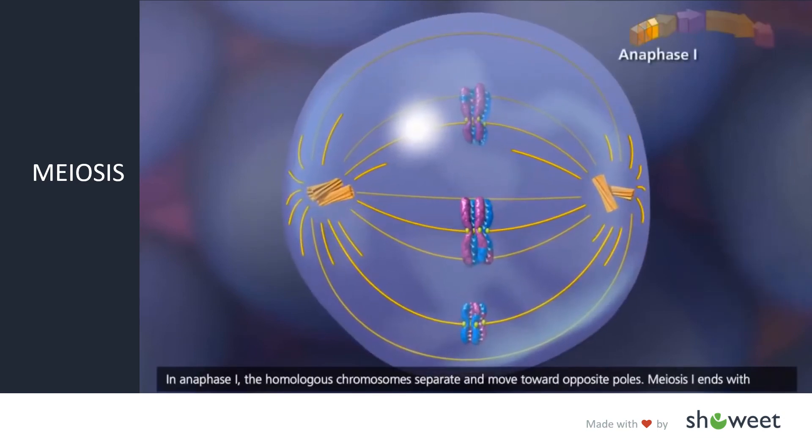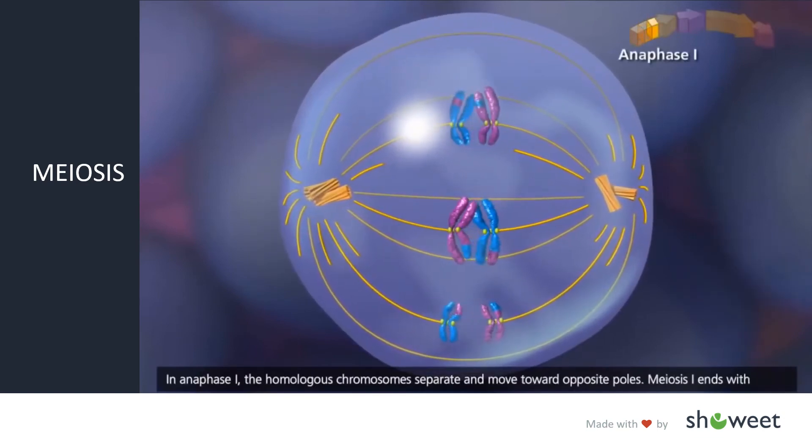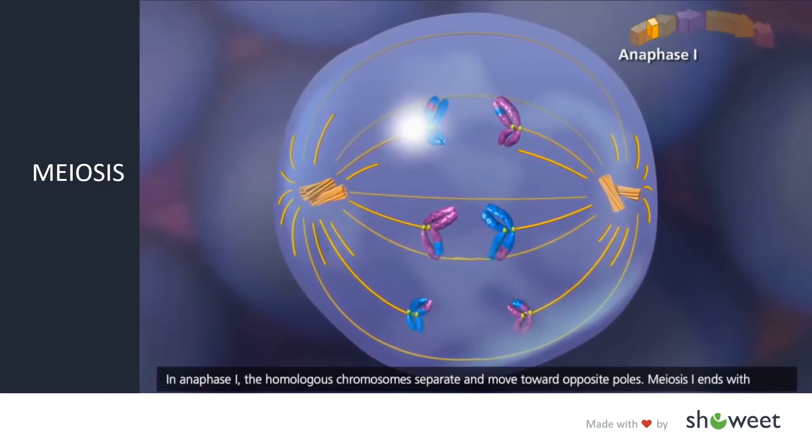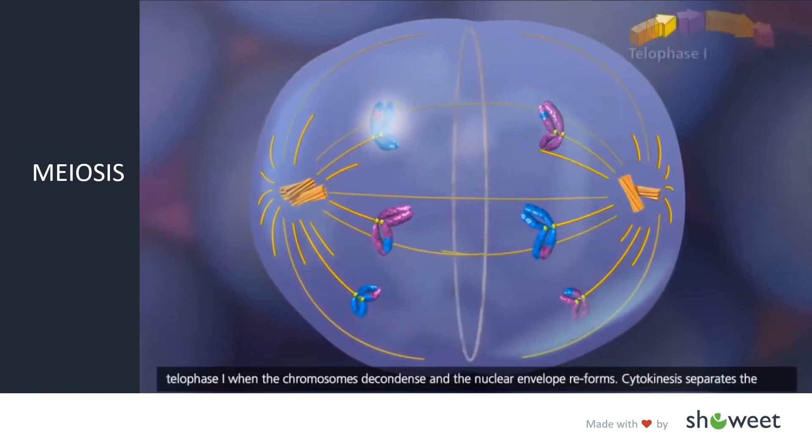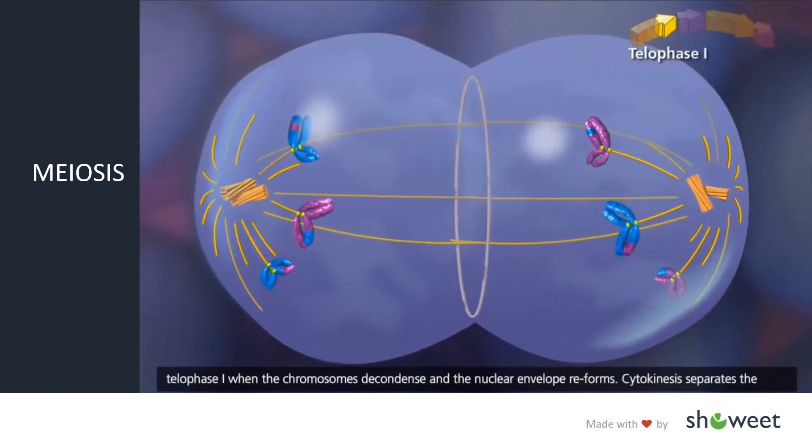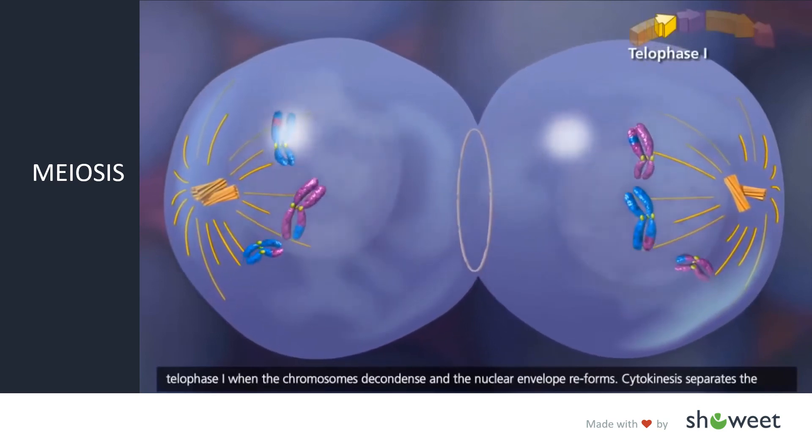In anaphase I, the homologous chromosomes separate and move toward opposite poles. Meiosis I ends with telophase I, when the chromosomes decondense and the nuclear envelope reforms.